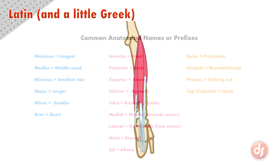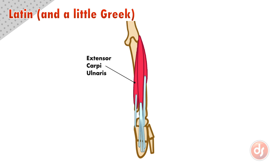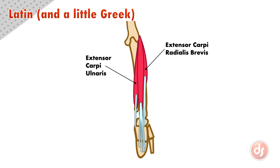For example, the extensor group on the forearm has a muscle called the extensor carpi ulnaris, meaning the extensor muscle that inserts into the carpal mass on the side of the ulna. There is a contrasting one called the extensor carpi radialis brevis that inserts into the carpal mass on the side of the radius. It has the name brevis because it is the shorter of two muscles on the thumb side.